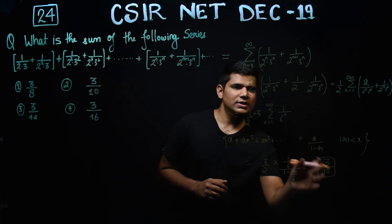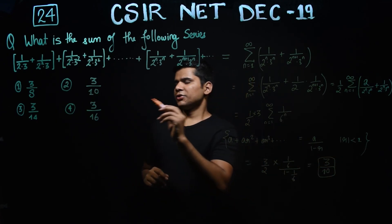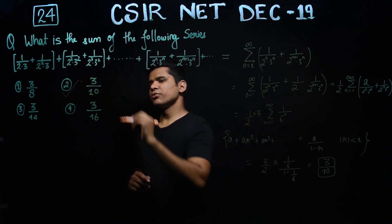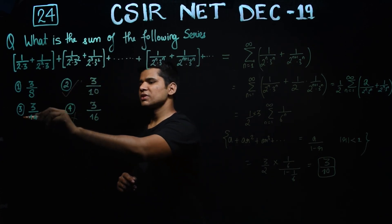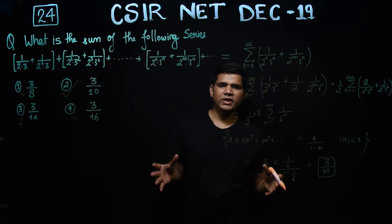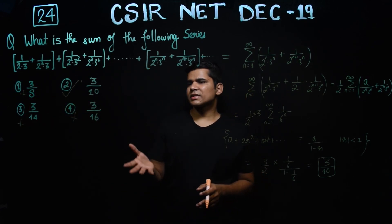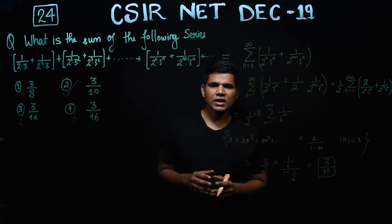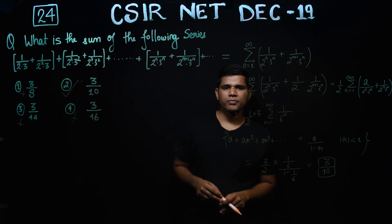So 3/10 is your sum. That means the second option is actually true and all other remaining options are false. This is a very easy question, and your exercise is to just check whether this series converges or not. Thank you.